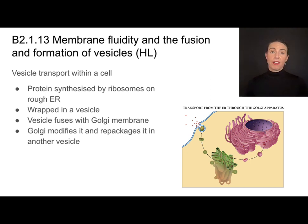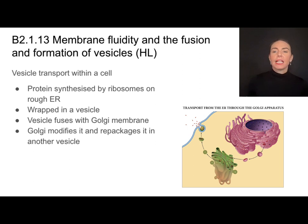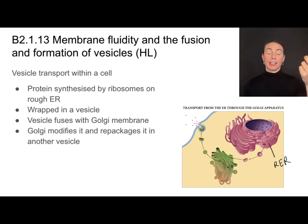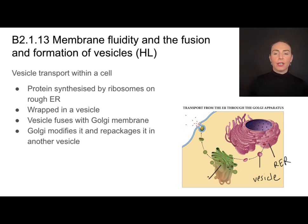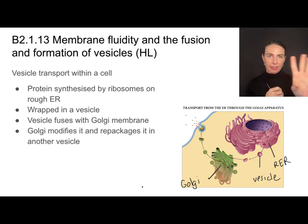Vesicles aren't just important for endocytosis — they're also important for moving things around within a cell. We don't want components to get lost or spread out in the cytoplasm, so we use vesicles to transport things within a cell. For example, on the rough ER, freshly synthesized proteins — made by ribosomes on the rough ER for eventual export — get wrapped in a vesicle, which travels to the Golgi. The Golgi accepts that vesicle, which fuses with it and releases the contents to the inside of the Golgi, which can then modify them.